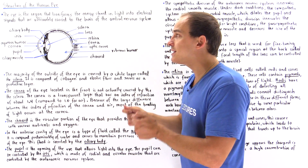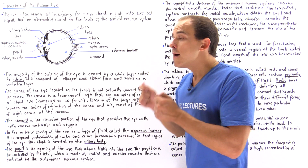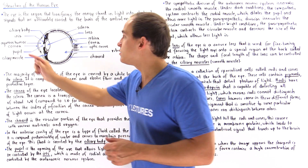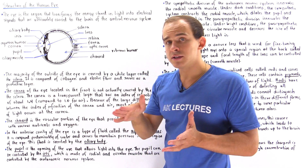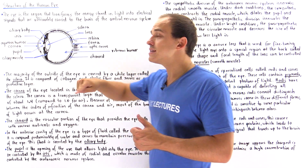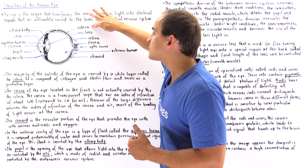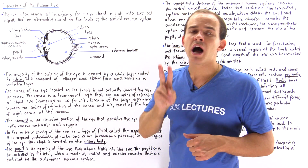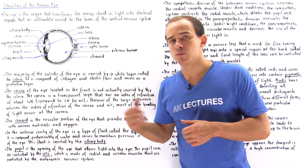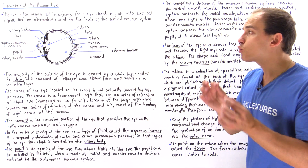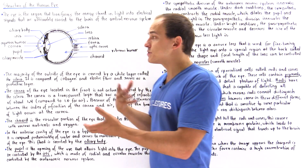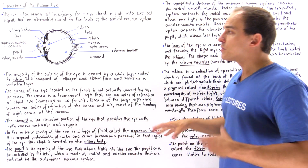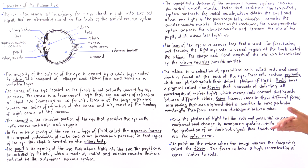The pupil is an opening that can be controlled by special types of smooth muscles known as the iris. When we look in the mirror, the iris is the colored portion of the eye while the sclera is the white portion. The iris consists of two types of smooth muscles: circular smooth muscles and radial smooth muscles, and both types are controlled by the autonomic nervous system.